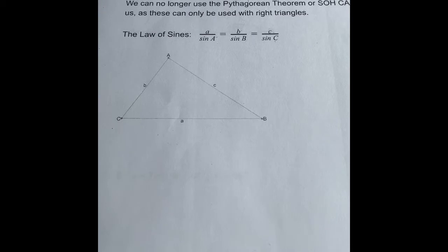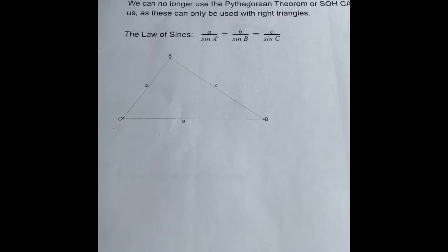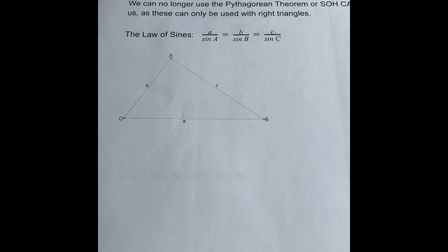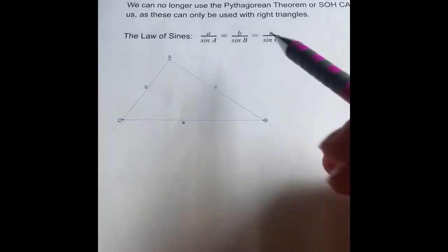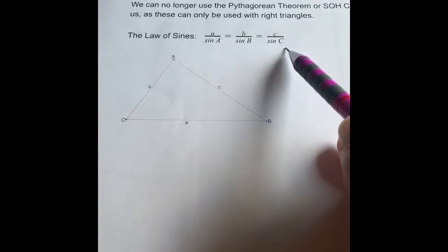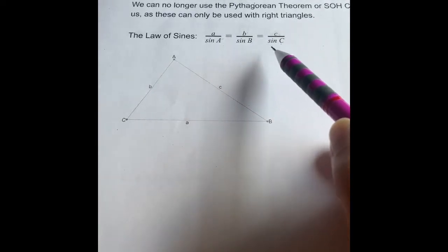So because we cannot use those two to help us solve these right triangles, I have to introduce you to two new types of formulas. We're going to look at the first one today. This one is called the Law of Sines. And you can see here that the Law of Sines consists of three fractions, but you will only use two of them at a time.